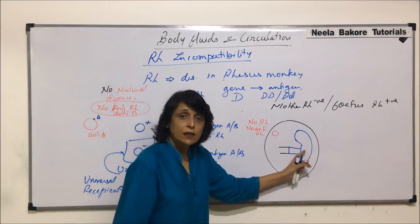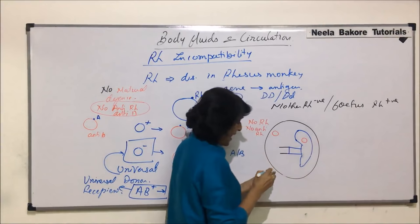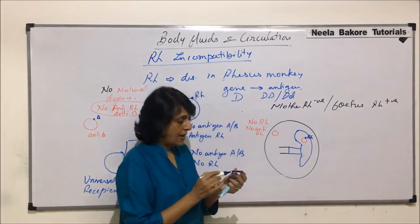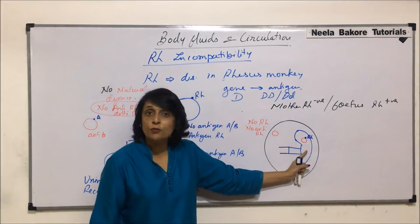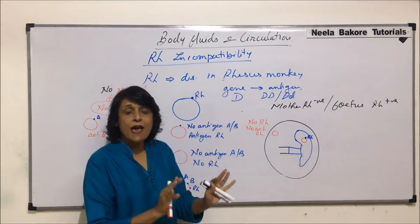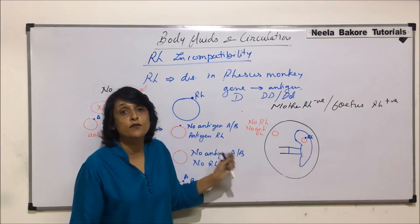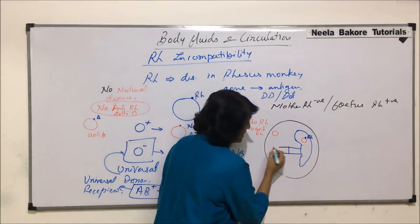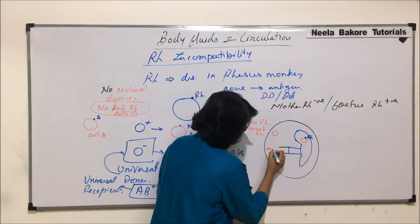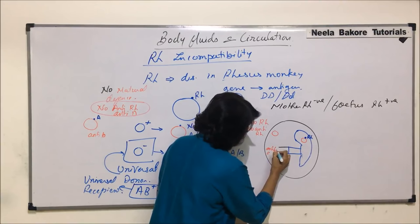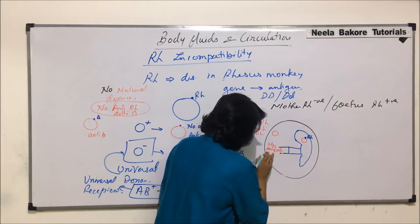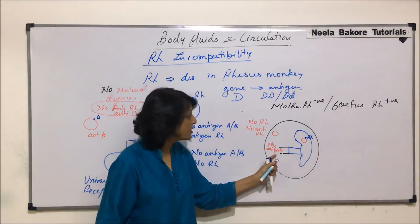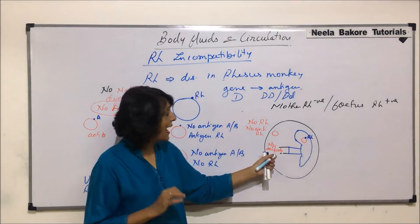The fetal body has RBC and on these RBCs the RH factor is present. Because this antigen is there, the fetal body is not going to produce antibodies against it. For the nine months of the gestation period, there is no mixing of blood. So there is no antibody in the mother's body, meaning no anti-body is crossing the placenta because the mother's body is not having the antibody.